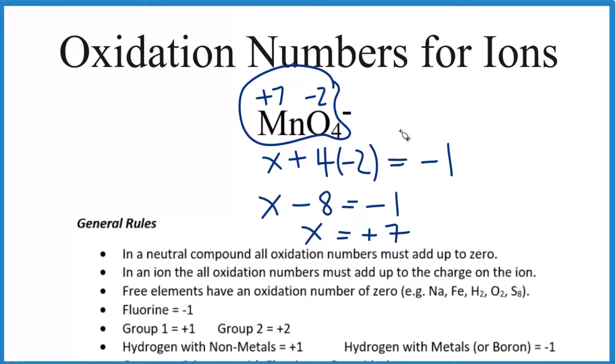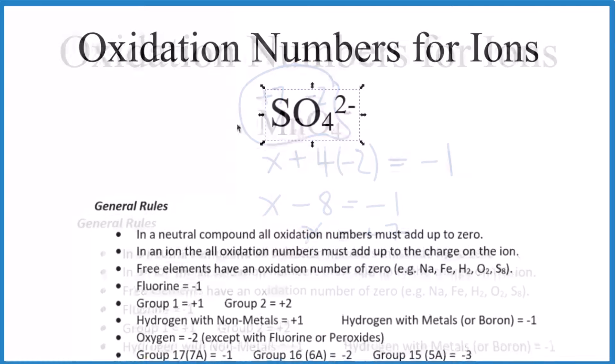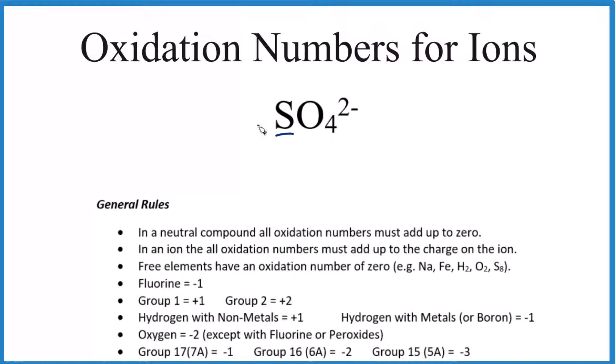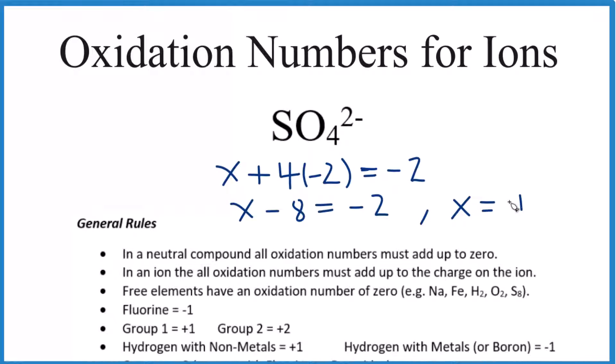Alright, so pause and you try one. Find the oxidation for the sulfur here in the sulfate ion. So we set up our equation, and we end up with the sulfur has an oxidation number of plus 6. That's pretty much how we do all of these.